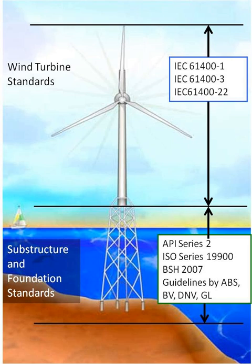The IEC 61400 is a set of design requirements made to ensure that wind turbines are appropriately engineered against damage from hazards within the planned lifetime. The standard concerns most aspects of the turbine life from site conditions before construction, to turbine components being tested, assembled and operated.